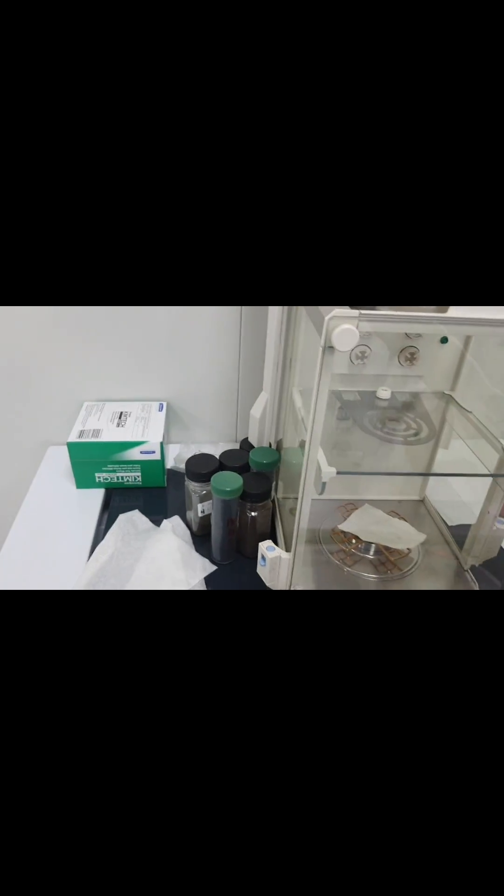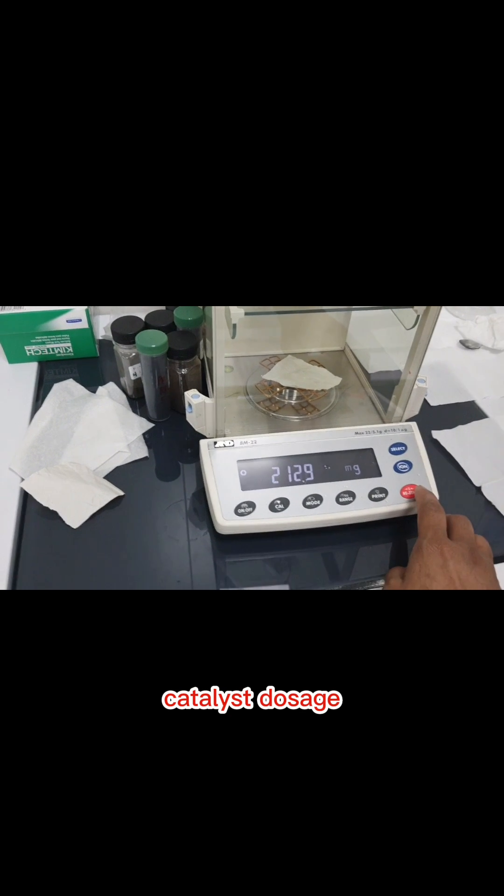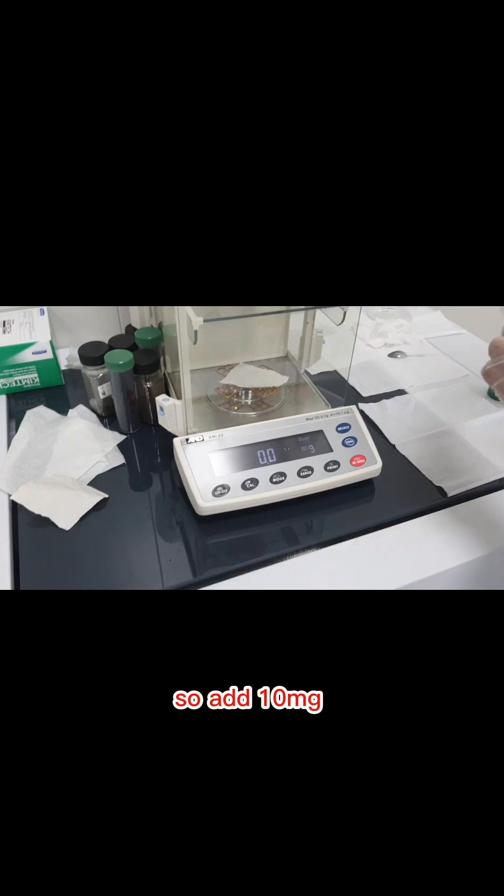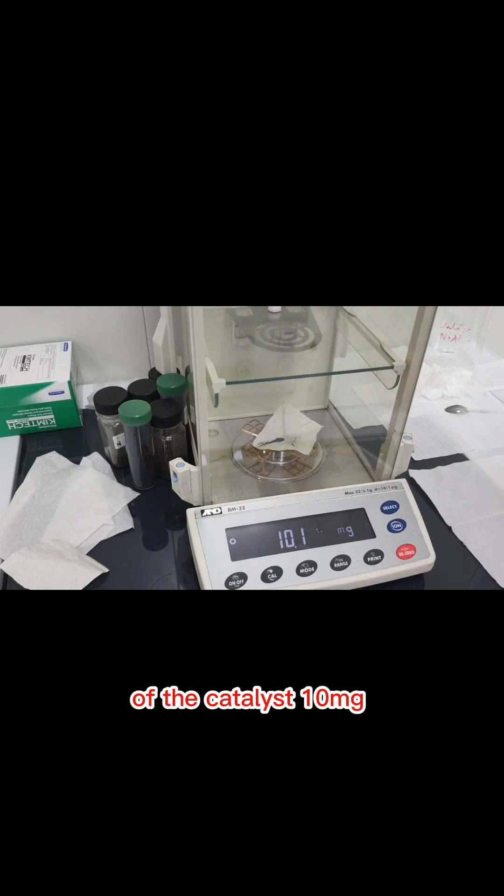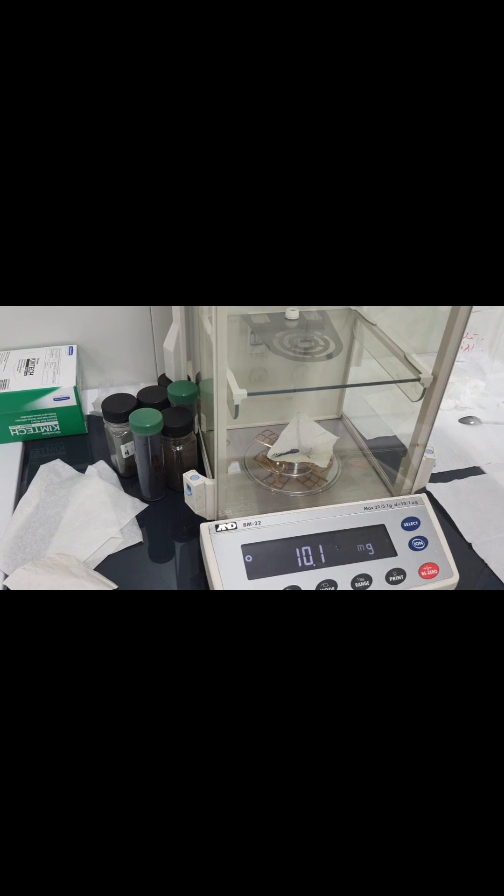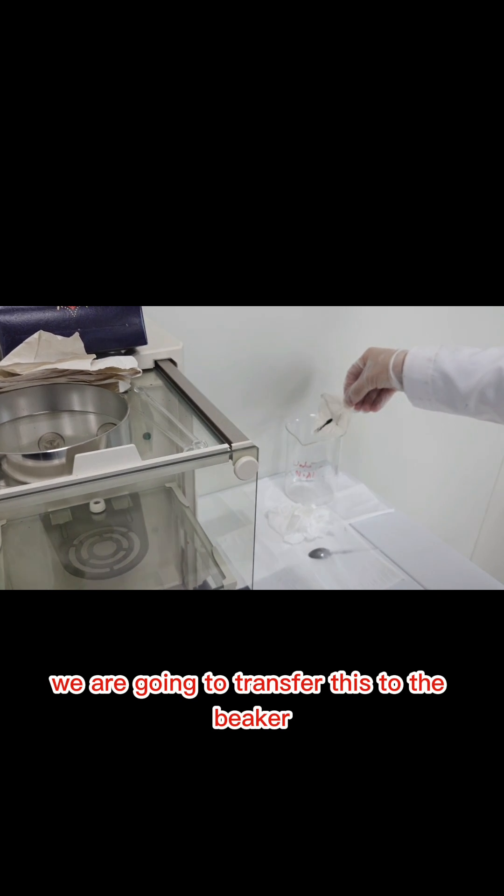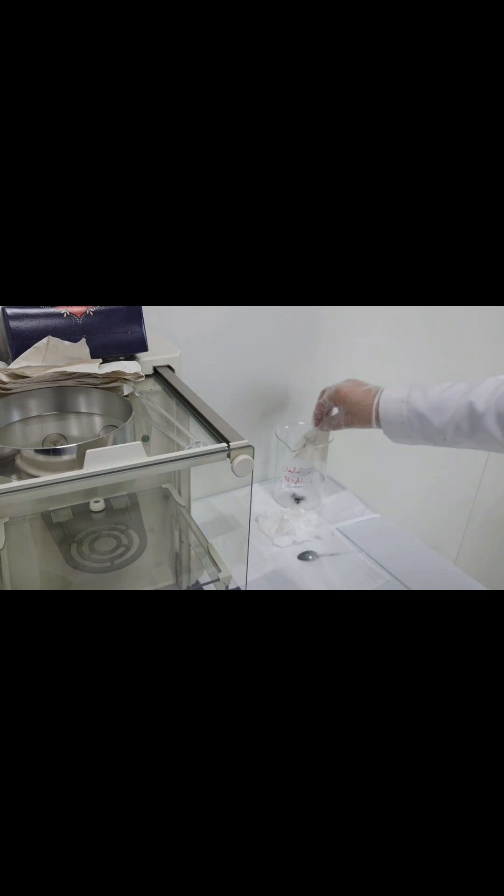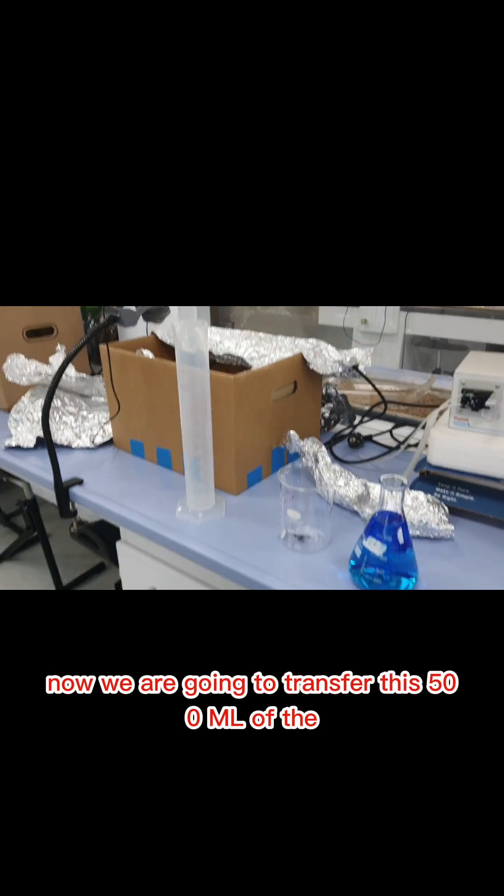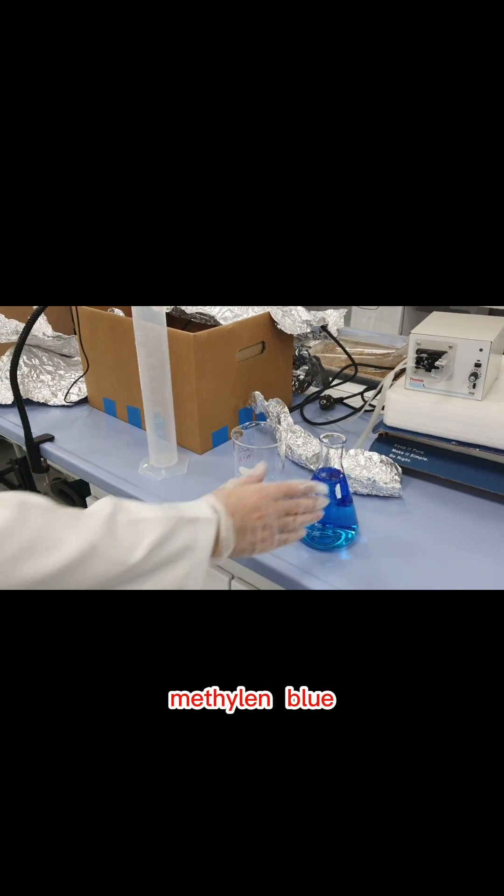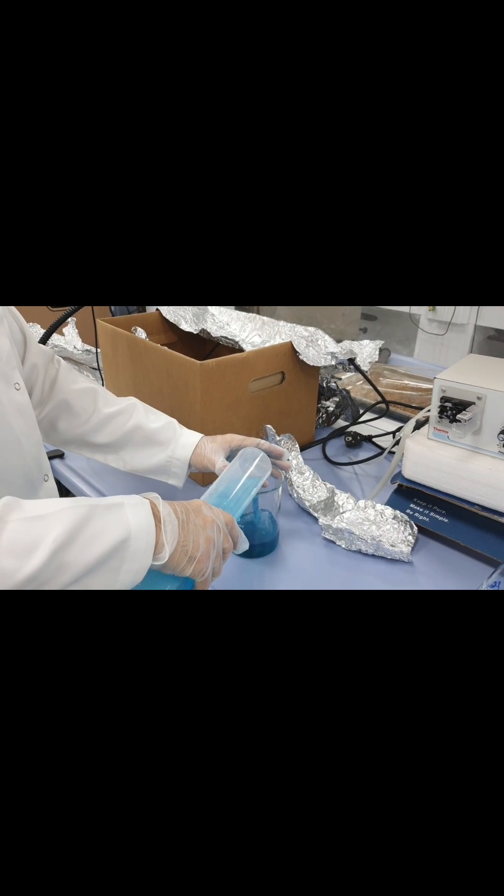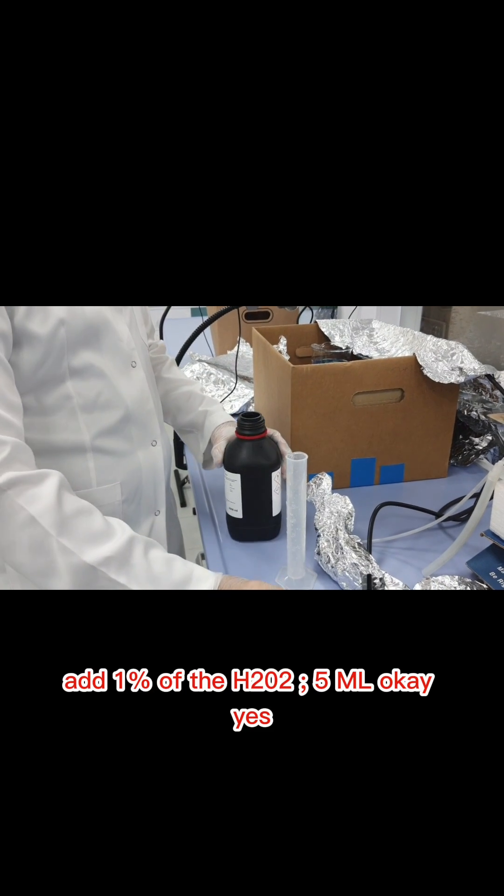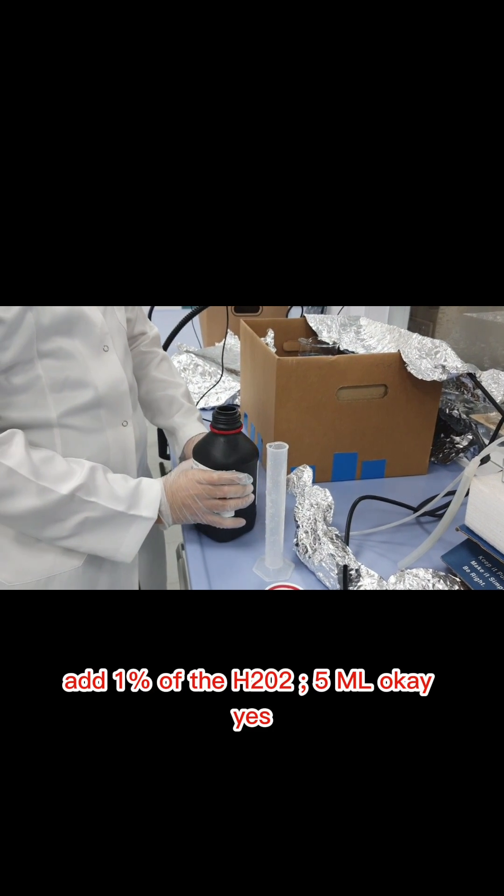We are going to measure the catalyst dosage. Add 10 mg of the catalyst and transfer this to the beaker. Now we are going to transfer 500 ml of the methylene blue with the help of a cylinder. Add 1% of the H2O2, 5 ml.